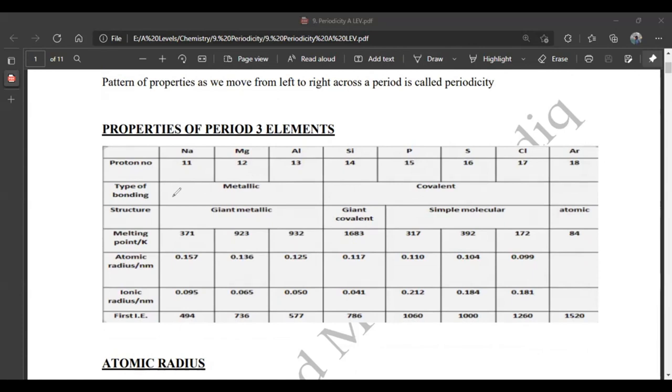The type of bonding: sodium to aluminum is metallic. Then it comes to chlorine. And argon has no bonding because argon is a single element. It is a noble gas and it doesn't bond.